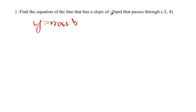And then that's my slope, so that's my m. So write y equals negative 3x plus b.